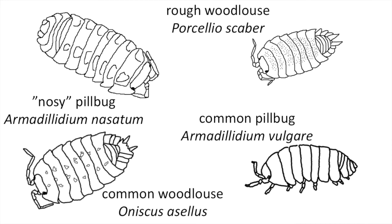I've included common names as well. We have the rough wood louse and the common wood louse — both are flat organisms that may run a bit faster. The Armadillidium, the pill bugs, are the ones that can roll up into a small ball as a defensive strategy. When scared, they may not run as fast as the wood lice, but they will roll up into a ball. These flat ones are also called sow bugs.